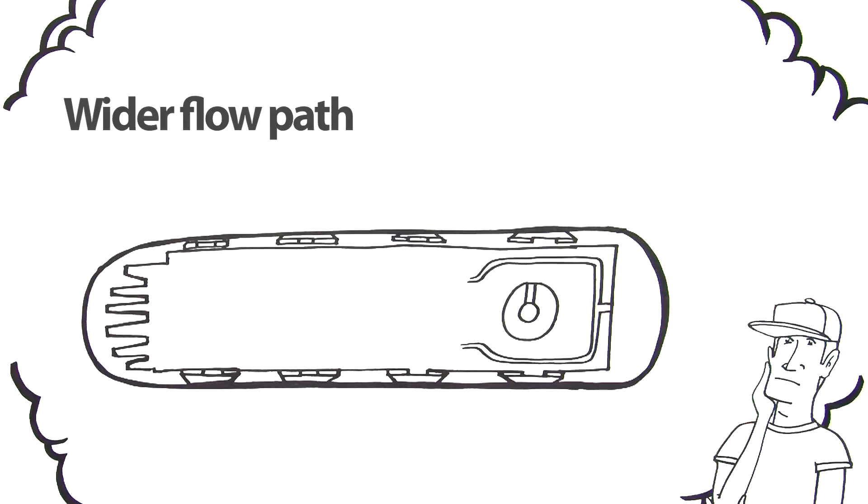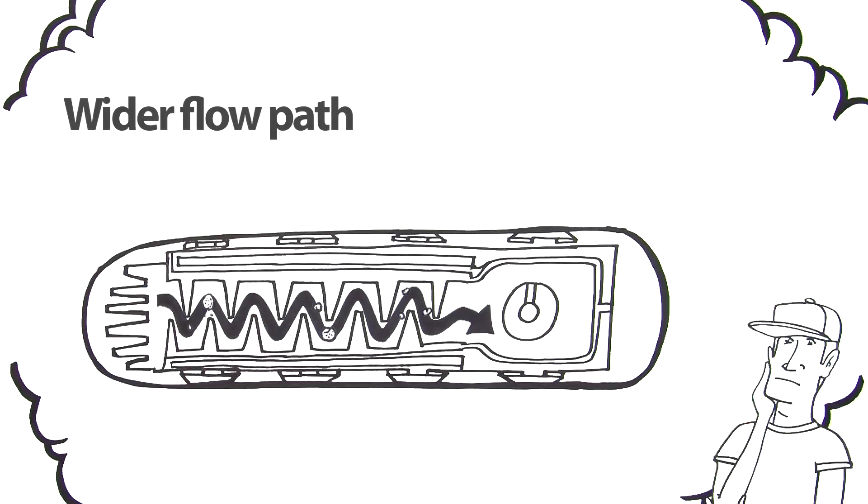You'd put in a wider flow path so dirt and grit go right by without plugging the emitter on the inside.